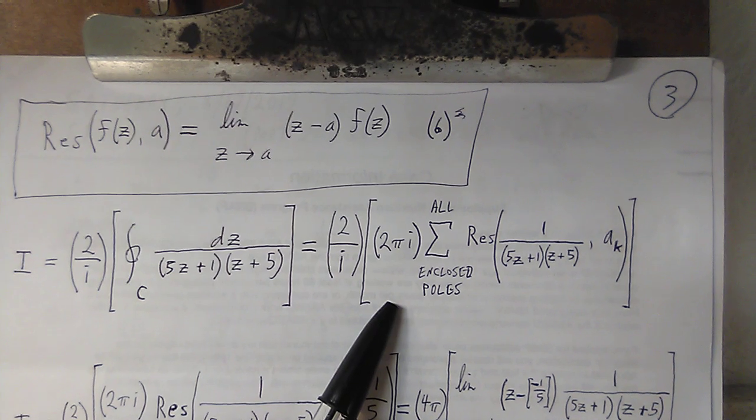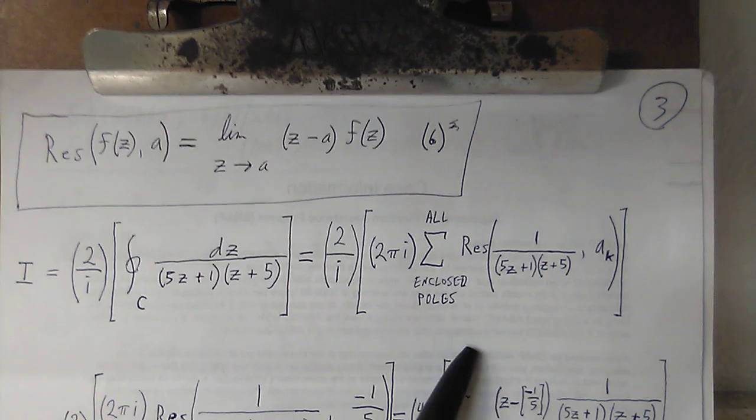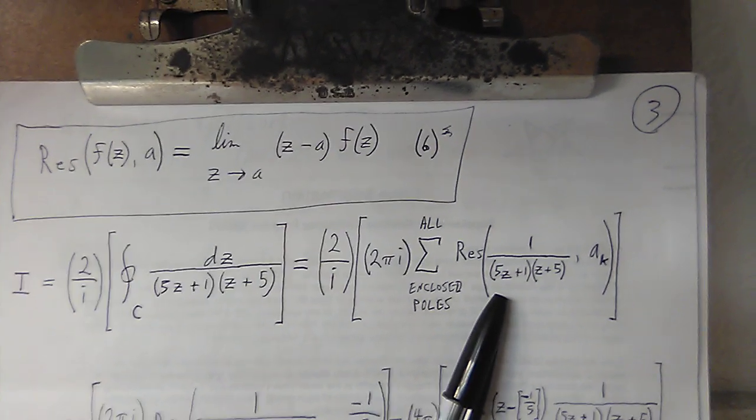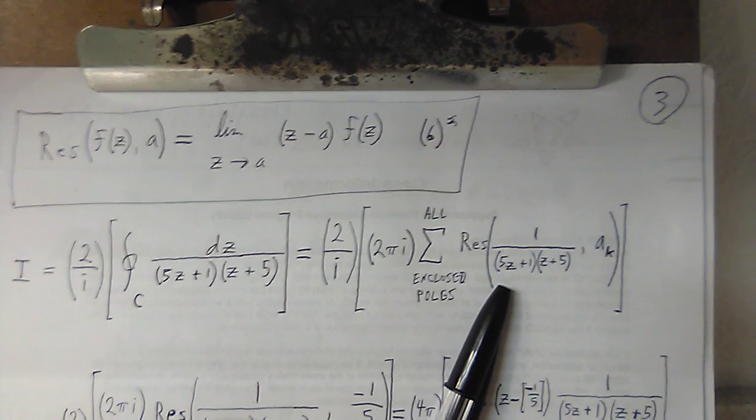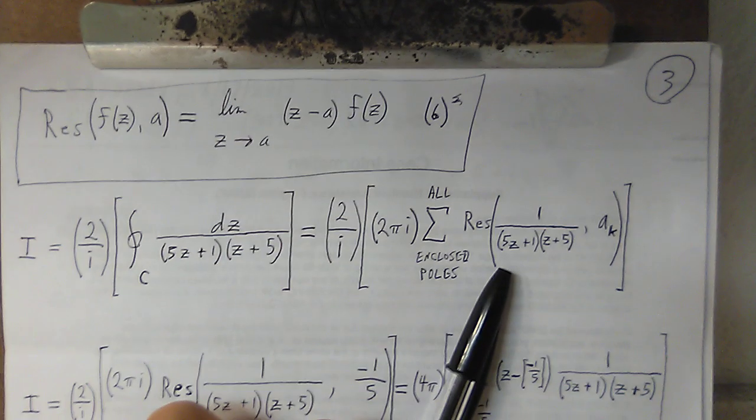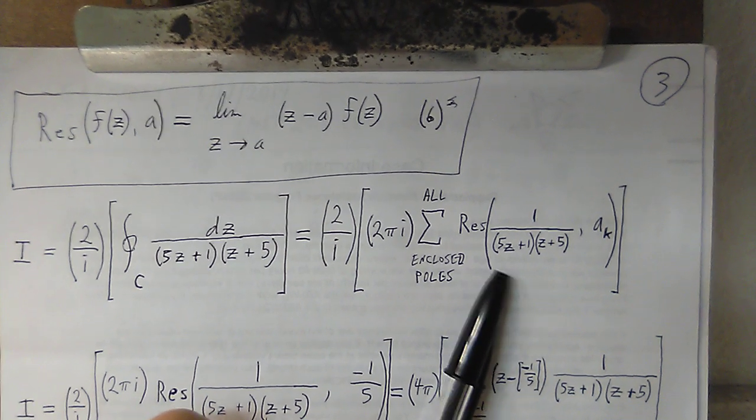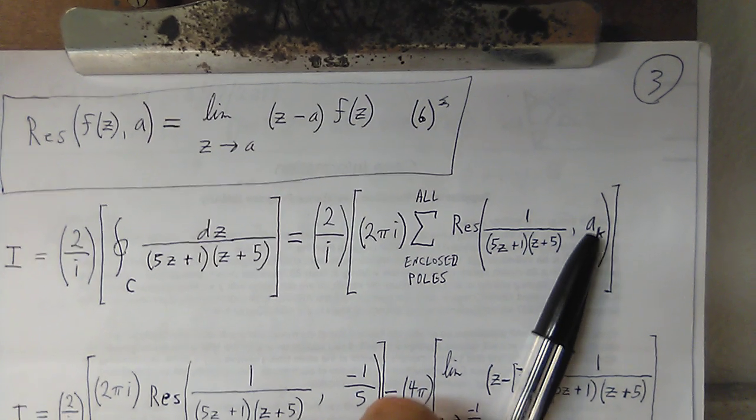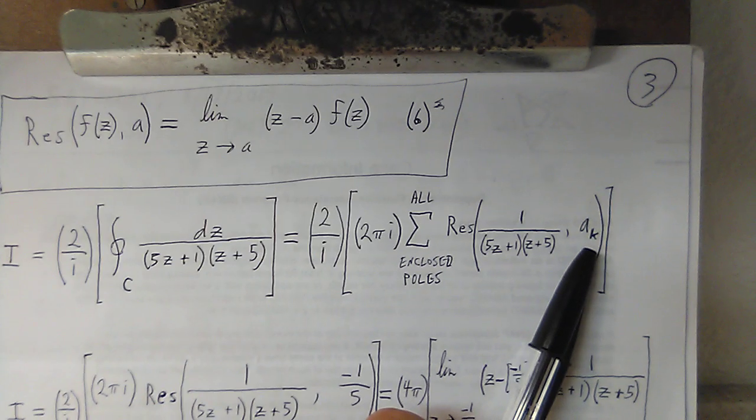there's only one inside the curve and those residues are for 1 over 5z plus 1 divided by z plus 5, summed over all the a sub k's,